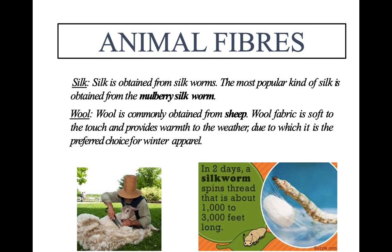Next are animal fibers. Silk is obtained from silkworms — the most popular kind from the mulberry silkworm. Next is wool, commonly obtained from sheep. Wool fabric is soft to touch and provides warmth, making it the preferred choice for winter apparel.